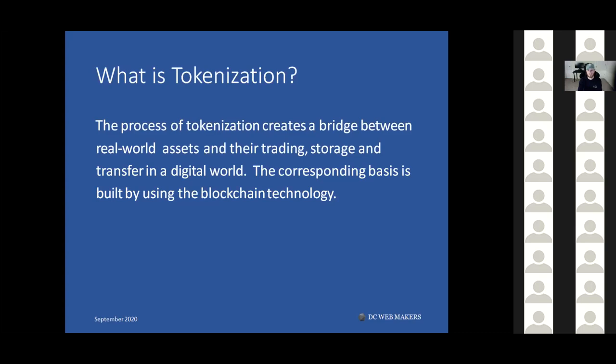To simplify: tangible assets are things like a bike or a car — something you can touch, feel, and hold. In the real world there are barriers to tangible assets. For example, if you want to sell your bike, you need to find someone who can afford to buy it. There are liquidity and accessibility barriers associated with some assets.